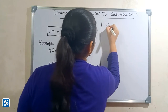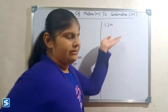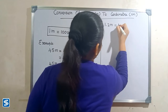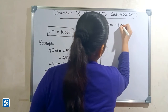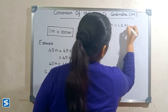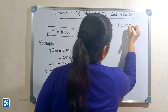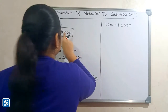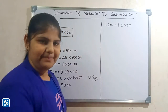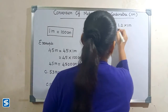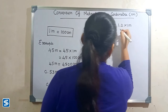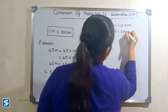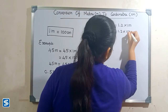Next we will take another example: 1.2 meters. 1.2 meters can be written as 1.2 multiply one meter. Now we have to substitute 100 centimeters in the place of one meter, so 1.2 multiply 100 centimeters.